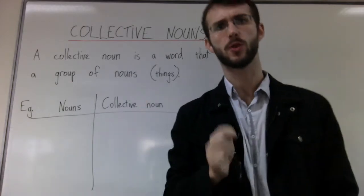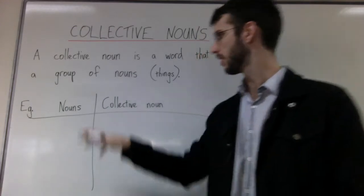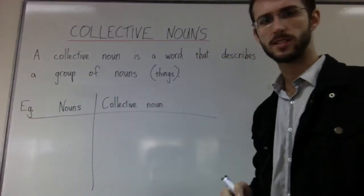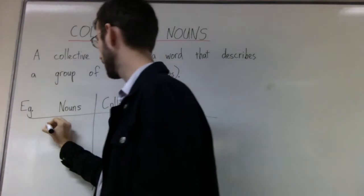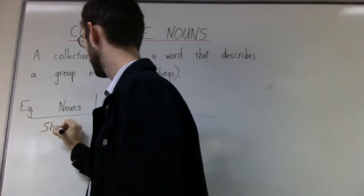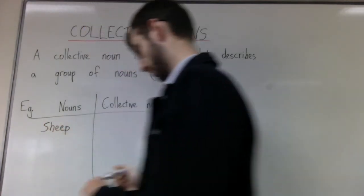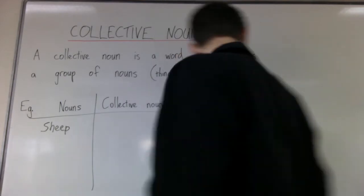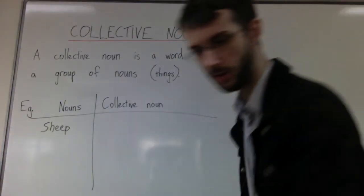It's probably easiest for me to give you a couple of examples. So over here, we've got a column that says nouns. And if I put sheep here... That pen's a bit dodgy. I might try a different one. Here it is.